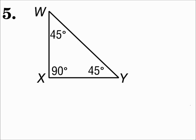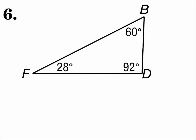Number five has a right angle, so it's a right triangle. Look at the angles on number six. Number six has an obtuse angle, so it's an obtuse triangle.